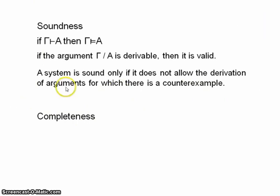So that's soundness. What about completeness? Completeness is, if A is a semantic consequence of gamma, then A is a syntactic consequence of gamma.